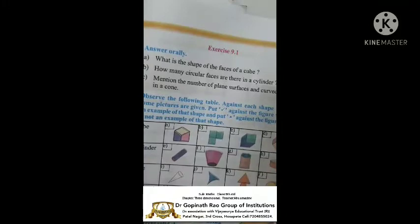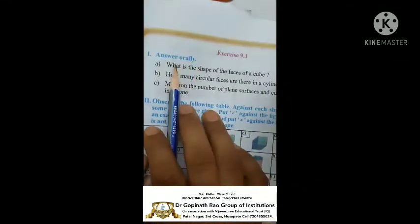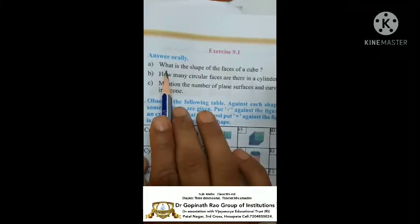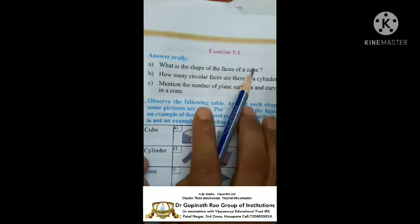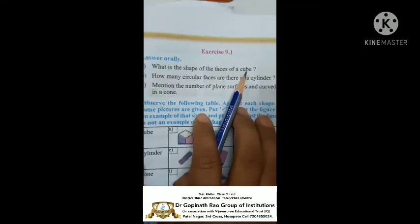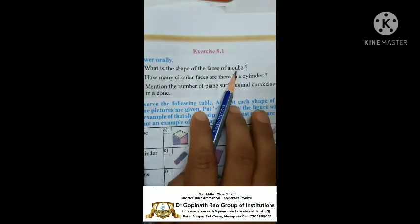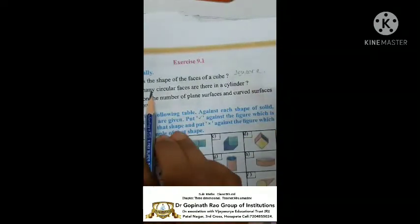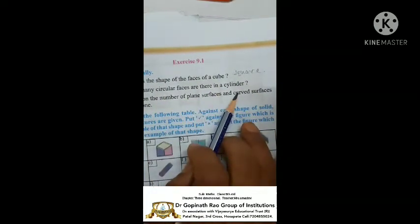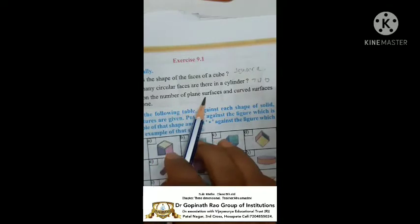Next, exercise 9.1. Answer orally. First question: what is the shape of the faces of a cube? Total faces how many are? The answer is square. Second one: how many circular faces are there in a cylinder? The answer is two. Third: mention the number of plane surfaces and curved surfaces in a cone.